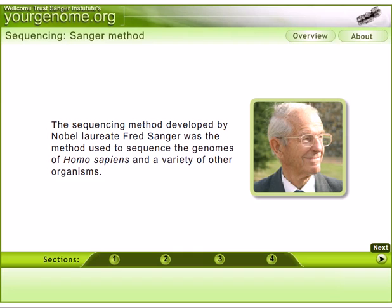Welcome again friends. In this particular video we will be talking about the Sanger method of DNA sequencing. The DNA sequencing method was developed by Nobel laureate Frederick Sanger and was the method used to sequence the genomes for Homo sapiens and a variety of other organisms. Homo sapiens, as a reminder, are us — human beings.